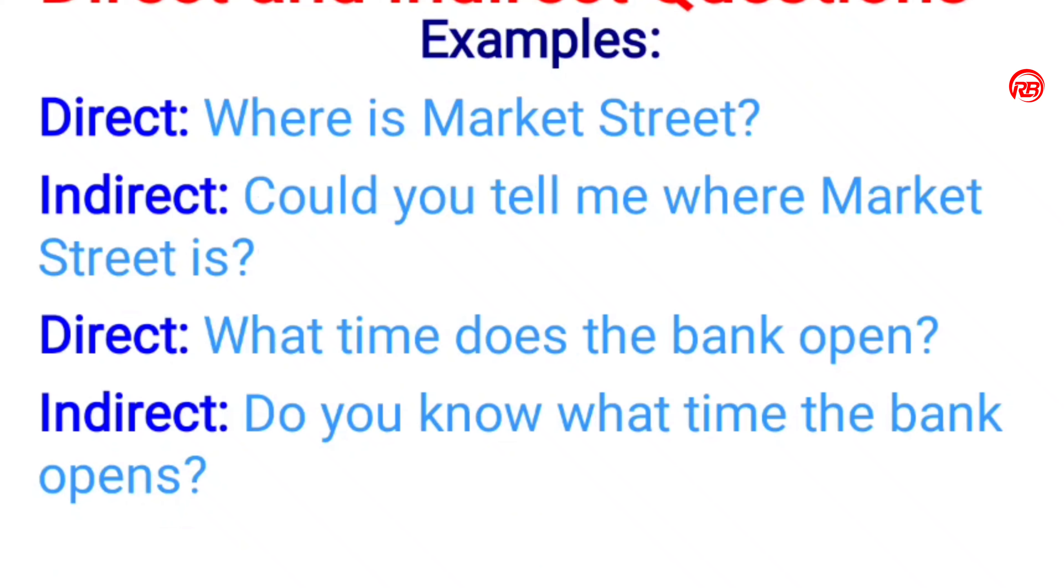Example number one. Direct: Where is Market Street? Indirect: Could you tell me where Market Street is? Example two. Direct: What time does the bank open? Indirect: Do you know what time the bank opens?